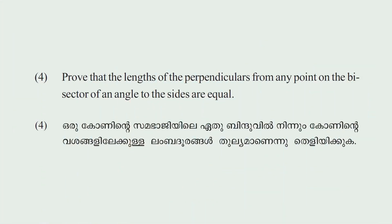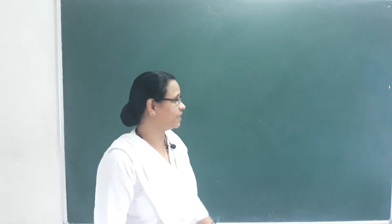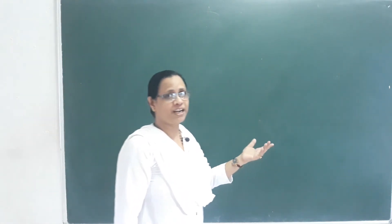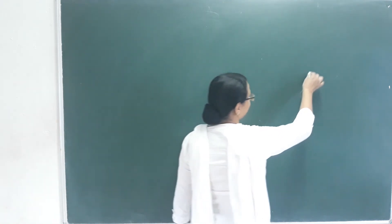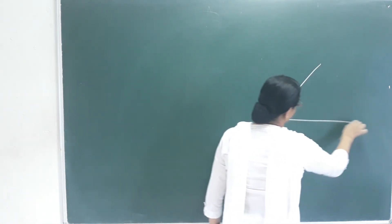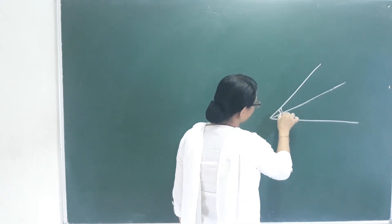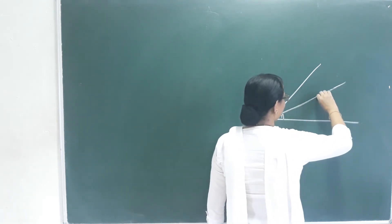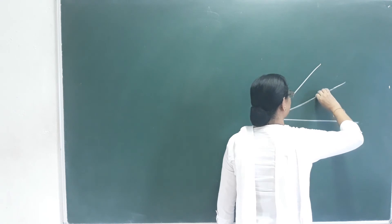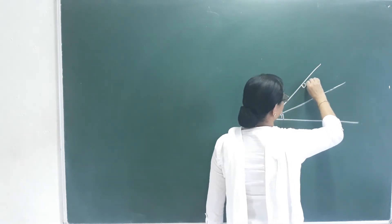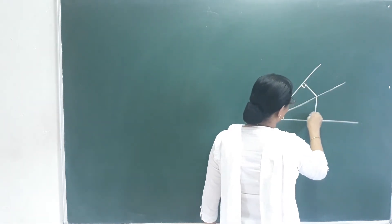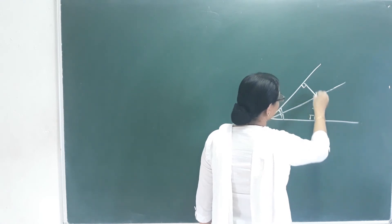Now let's go to the next question. Prove that the length of the perpendiculars from any point on the bisector of an angle to the sides are equal. We have an angle with a bisector, meaning the two angles are equal. From any point O on the bisector, perpendiculars are drawn to the two sides, and we can prove these two perpendicular lengths are equal.